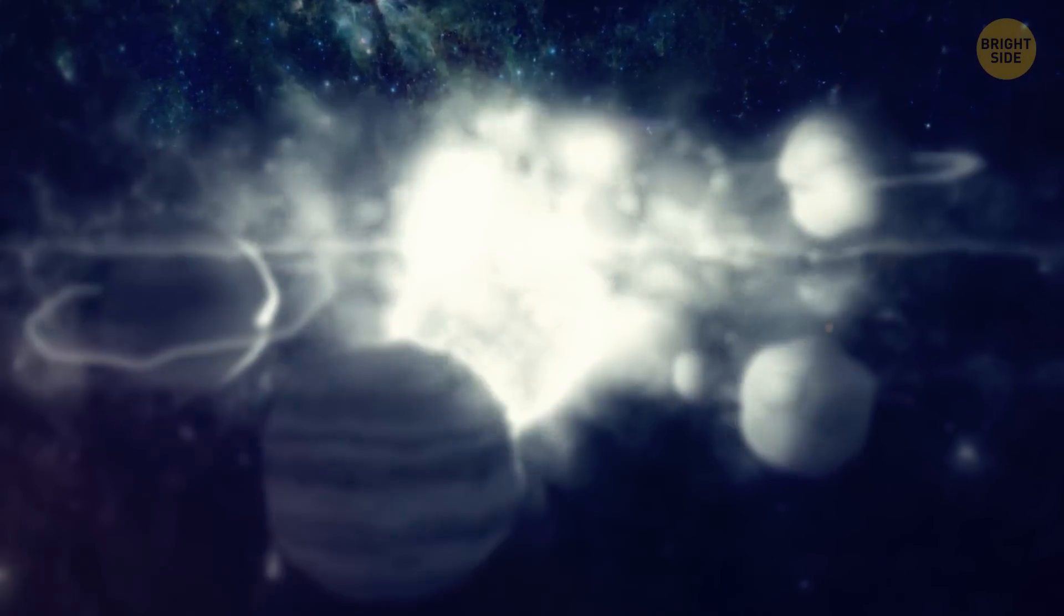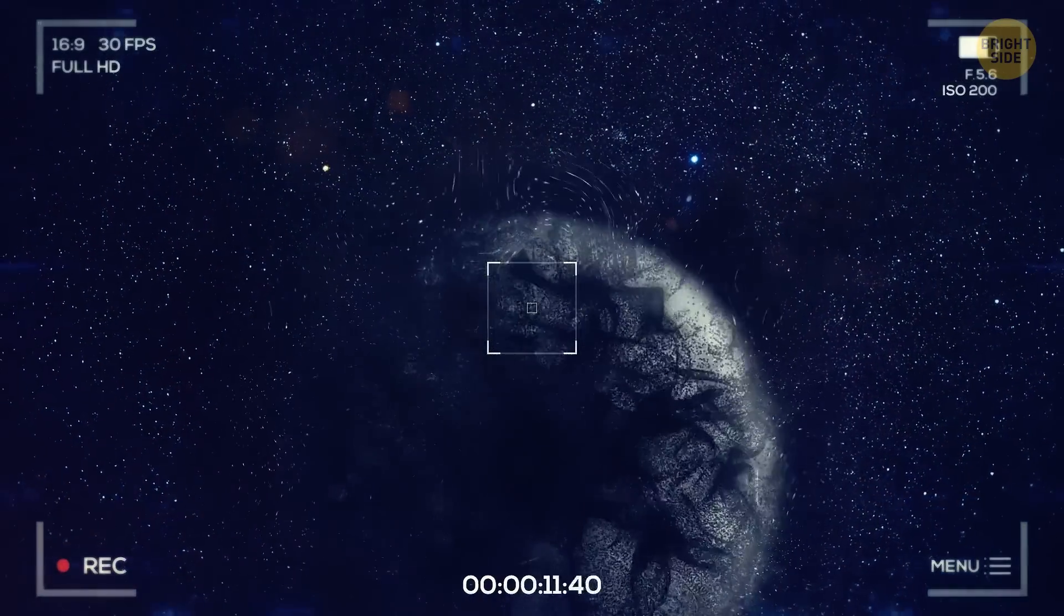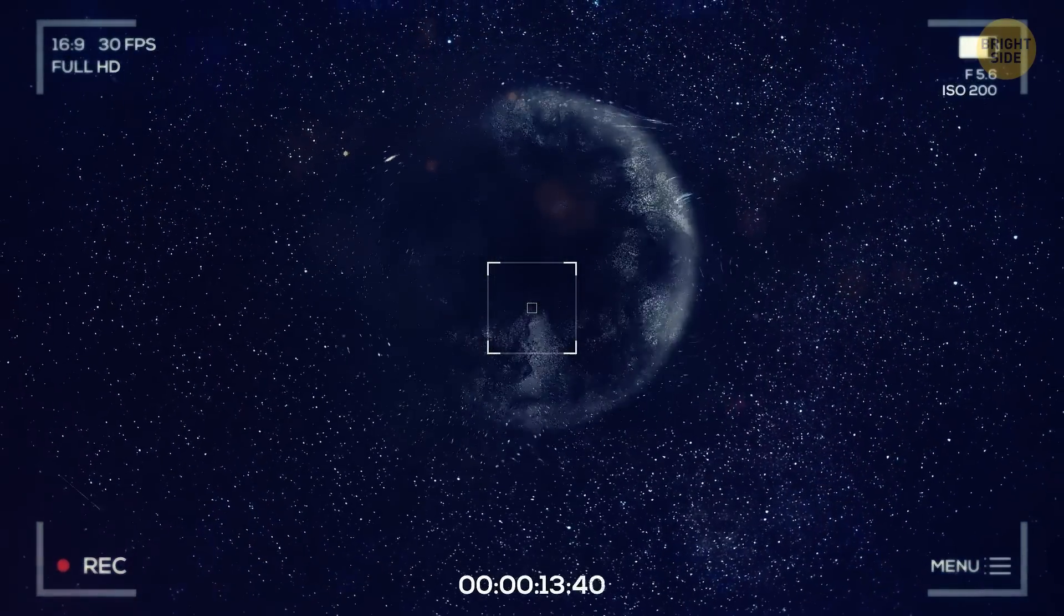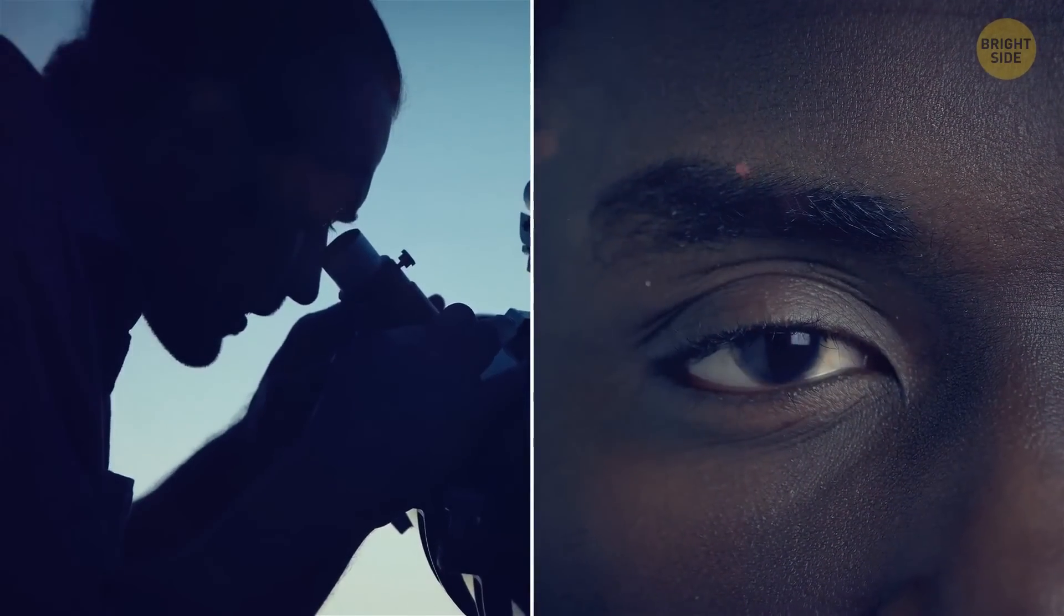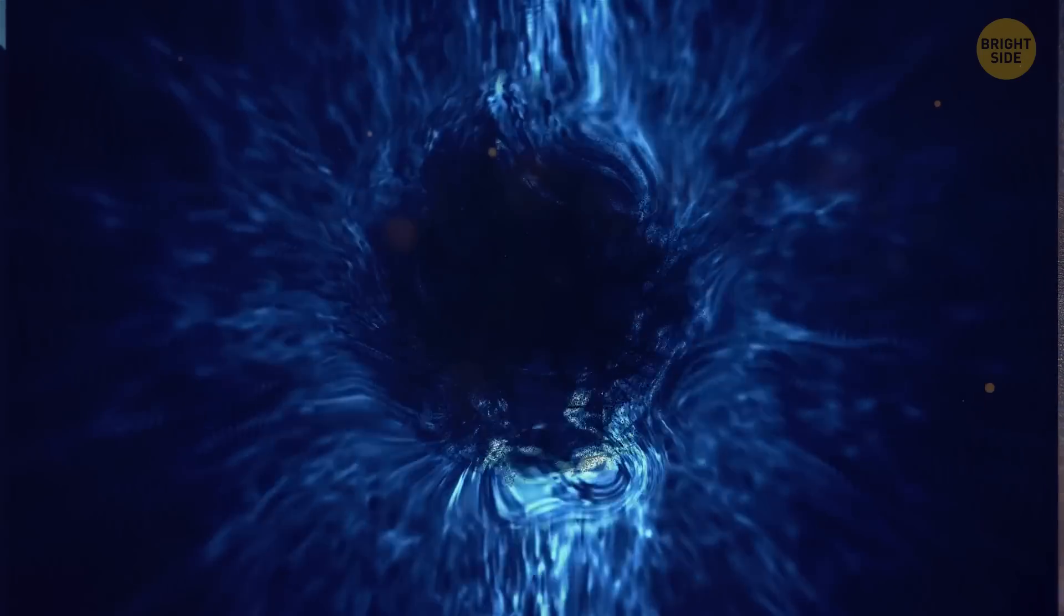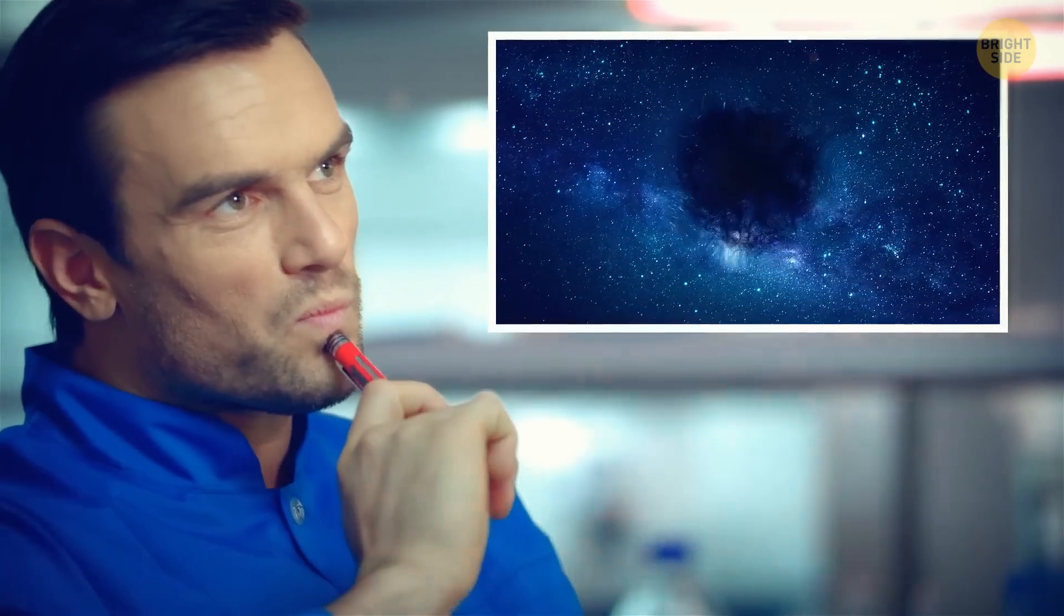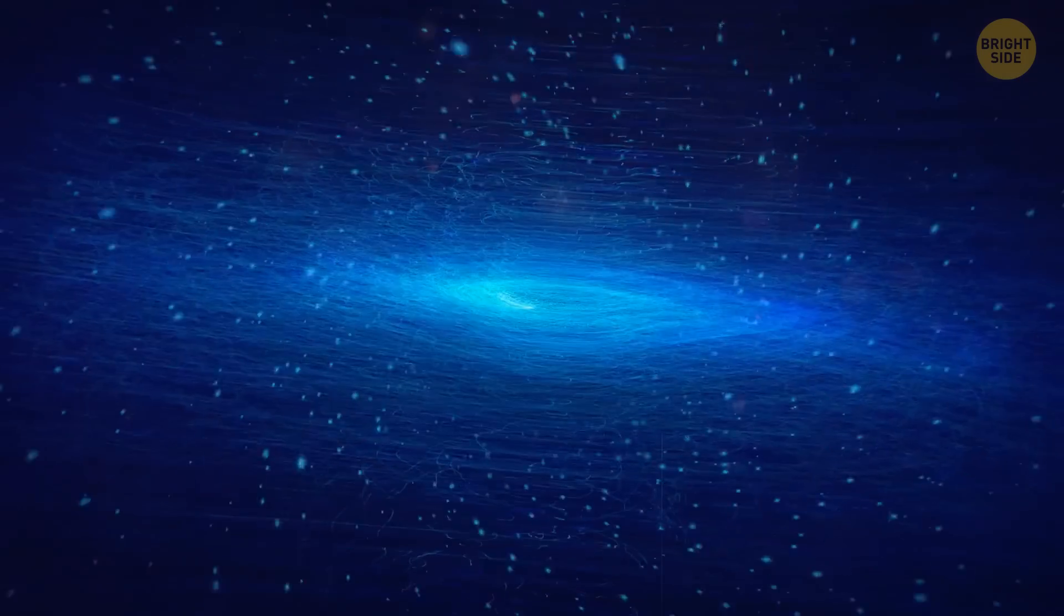Dark matter is like the ghost of our world. It doesn't emit, absorb, or reflect any light. We can't see it with telescopes or our eyes. That's why we call it dark matter. But if we can't detect it in any way, how do we know it exists? Because of its gravitational pull.